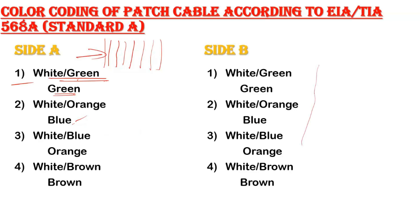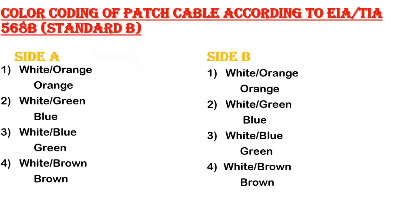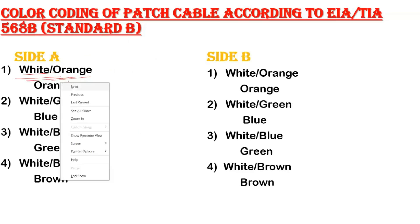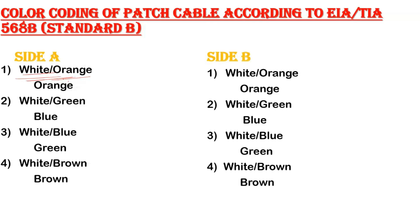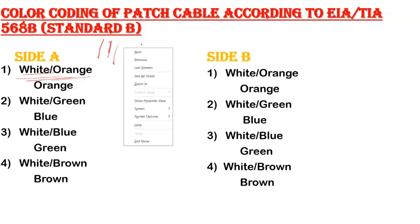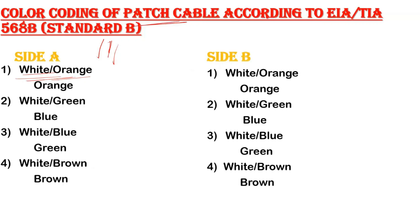If you make your cable with the same color order on both ends, that will be a patch cable — a straight-through cable — according to the 568A standard for home networks. For 568B, the color coding changes: the first wire is white-orange instead of white-green. The 568B order is: white-orange, orange, white-green, blue, white-blue, green, white-brown, brown — the same on both sides for a straight-through patch cable.